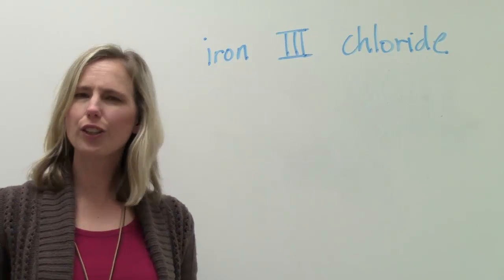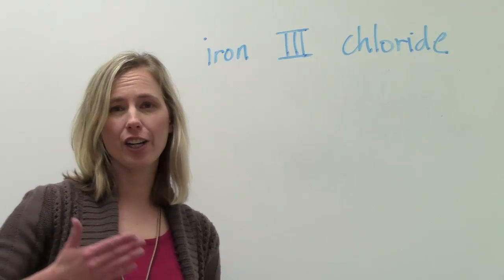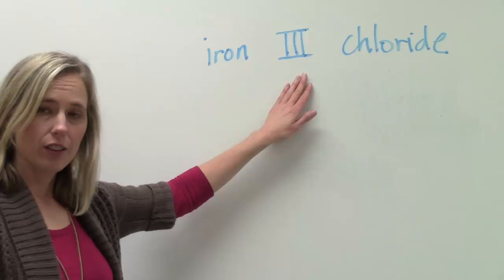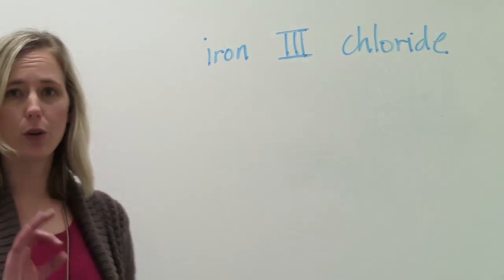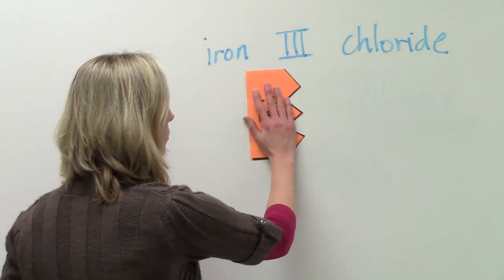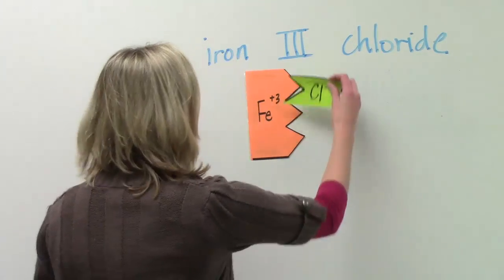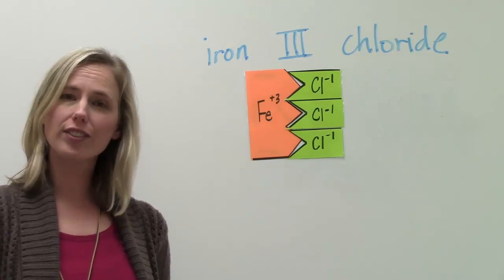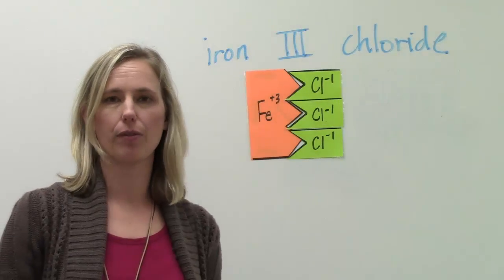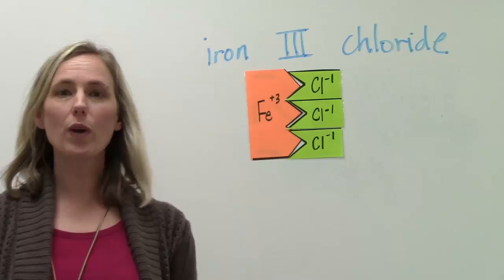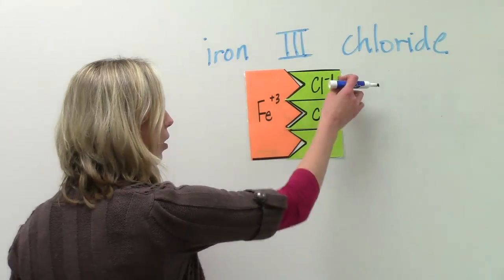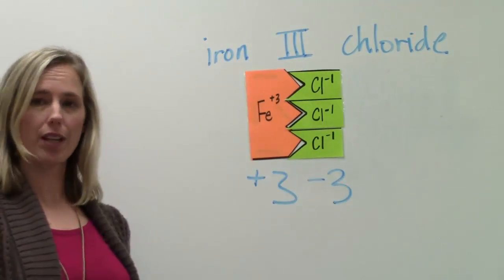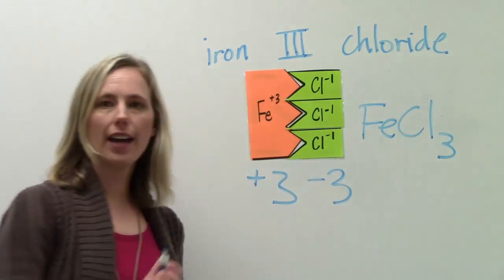Let's look at the next example. It looks really similar to the last one — before we had iron two chloride, now we've got iron three chloride. The Roman numeral is the charge, so we do iron with a positive three. To make this neutral, we've got to cancel the positive three with a negative three. Since each chloride ion is a negative one, we need three of them to come up with a negative three charge. Negative one, negative one, negative one adds up to negative three, which cancels out with our positive three. The overall formula is FeCl₃.